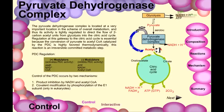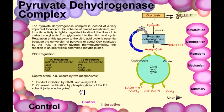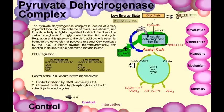Control of the PDC occurs through two mechanisms. The first is product inhibition: high concentrations of acetyl-CoA and NADH, being the products, inhibit all steps. The second is covalent modification by phosphorylation of the E1 subunit. This phosphorylation-based control is only applicable in eukaryotic cells — in prokaryotic cells, phosphorylation and blocking of enzyme E1 is not accessible.